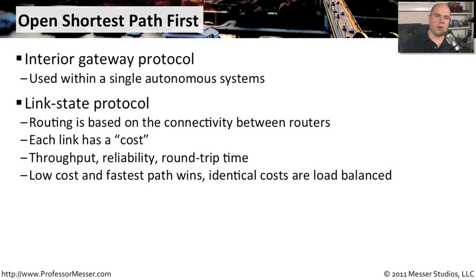It's also a link state protocol, which means the cost of routing is determined between routers, and each link connected into our network has a cost associated with it. OSPF also looks at throughput, reliability, and round trip time to make its decisions about whether it sends a packet out one direction or another.